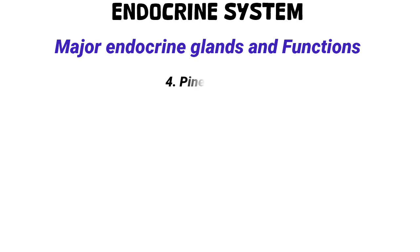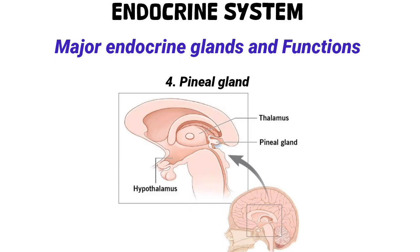Number four: the pineal gland. The pineal gland is located in the diencephalon of the brain, and it secretes melatonin, which is a hormone that regulates the sleep-wake cycle and biological rhythms.